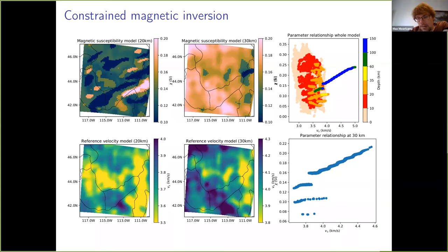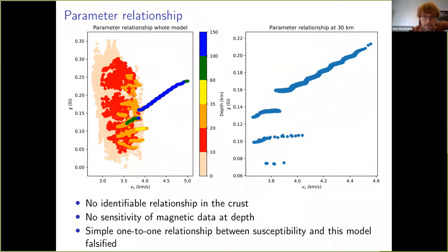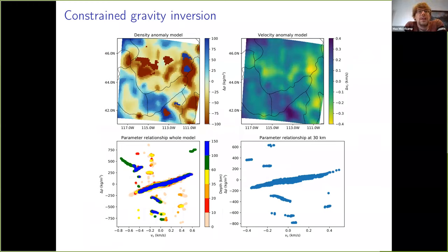So that's an example with magnetic data. Now we can do the same with gravity and the seismic velocity model. Those of you who have done seismic inversions will know that there are often assumed relationships between density and velocity, so that seems more reasonable. Here are the results of the constrained inversion — I'm doing an inversion of the gravity data and I keep the velocity model fixed as a constraint. One change: in the previous slide I was using absolute velocity, whereas here I'm using velocity anomaly, because I'm also dealing with density anomaly and the two seem better related to each other.